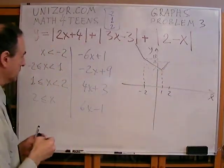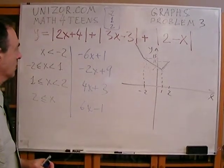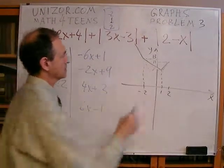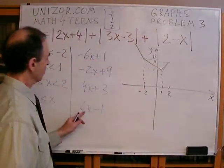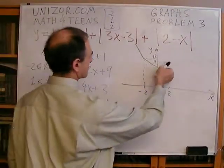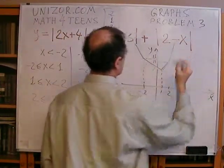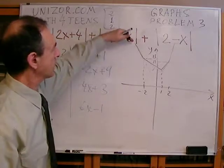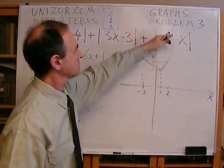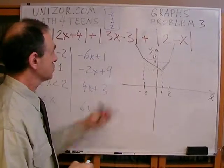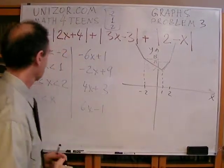And finally, six x minus one. And again, at two, it's equal to eleven. So it's the same number. And then it grows quite steeply, steeper. This is four x, so six x would be steeper than that. So our graph contains four segments joined together, which looks basically like this graph.